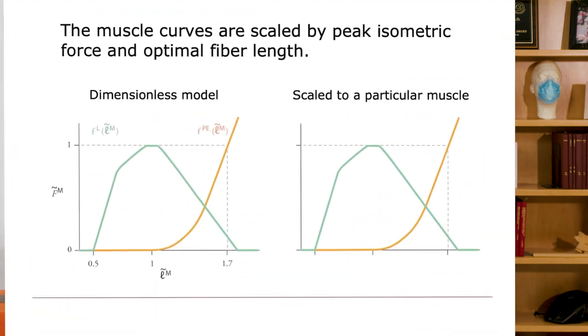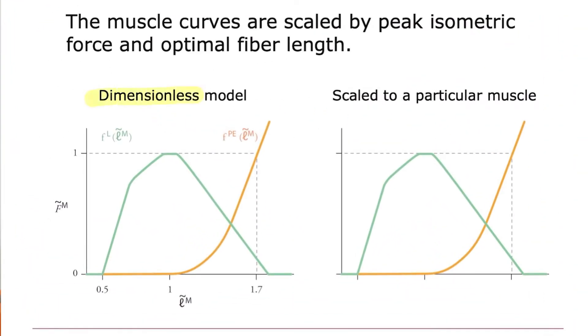So for example, here's a dimensionless model. So it's a dimensionless force by a dimensionless length. But I can scale that to a particular muscle. How do I do that? If I know the peak force in muscle, I can add the peak force right here.